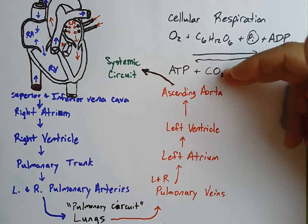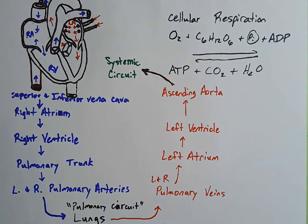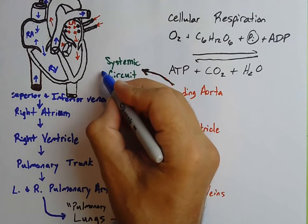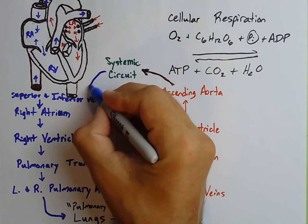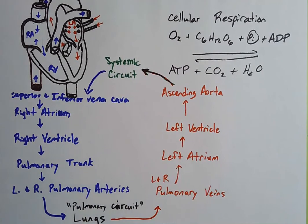As oxygen is used in the systemic circuit to make ATP, the byproduct is CO2. So we're losing oxygen and picking up CO2, making the blood poorly oxygenated. All that systemic circuit blood then feeds back into either the superior or inferior vena cava. It's just a big loop — blood flow through the heart is just a big loop.